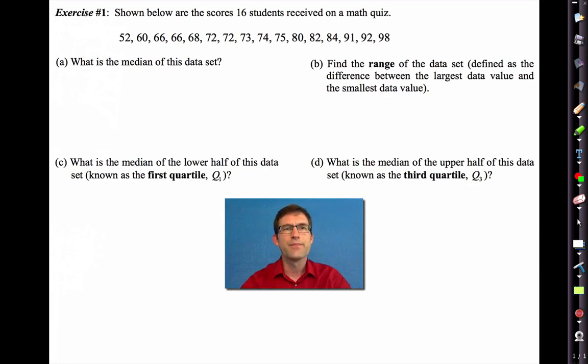In Exercise 1, it says shown below are the scores 16 students received on a math quiz. And they're written in ascending order and that's actually kind of important for this problem. The first thing that we're asked is to find the median of the data set, the median. Now, this is actually review.